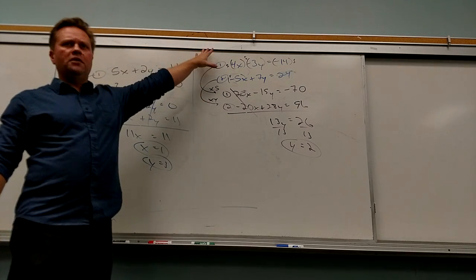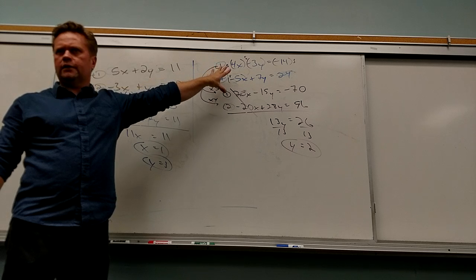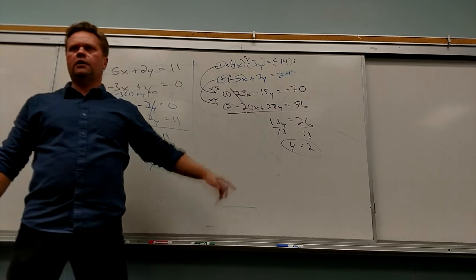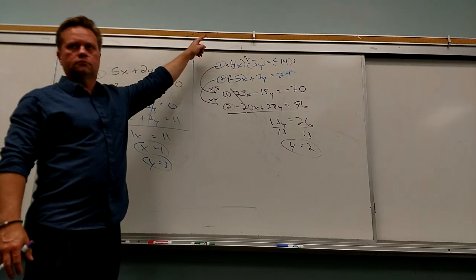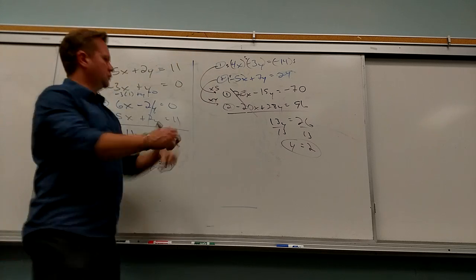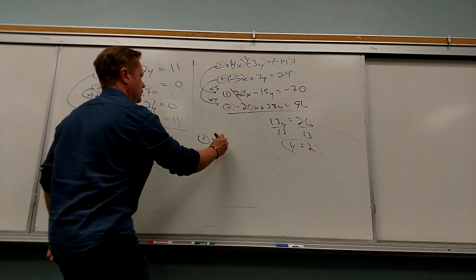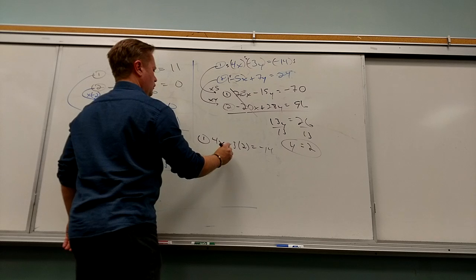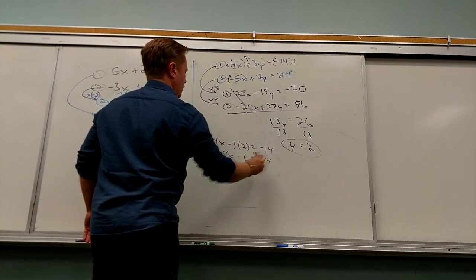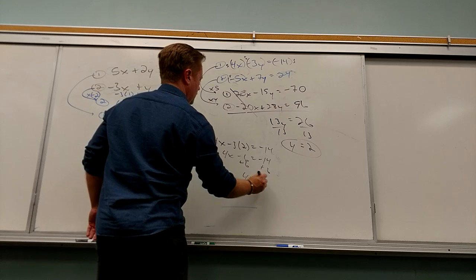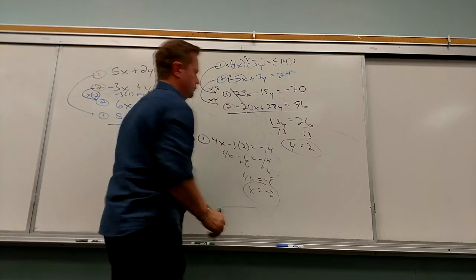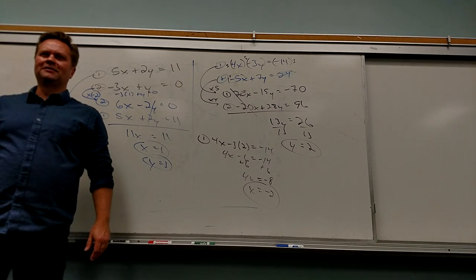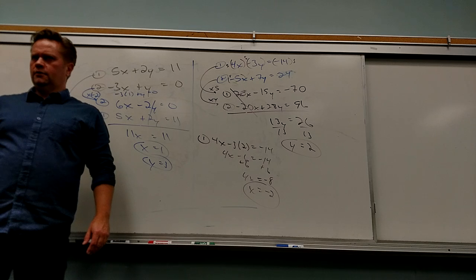And now you just pick whichever equation to find x. Where do you want to put y equals 2? First one. I get 4x minus 3 times 2 equals negative 14. So 4x minus 6 equals negative 14. Add 6 — 4x equals negative 8. Divide by 4 — x equals negative 2. And that's the answer I made.